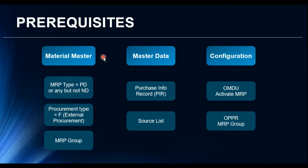Coming to the material master — we need to make sure that the MRP type is maintained as PD, or it can be any other MRP type relevant to MRP, but it should not be ND. ND is basically 'no planning,' so any material that has the MRP type as ND will not be considered in the MRP.